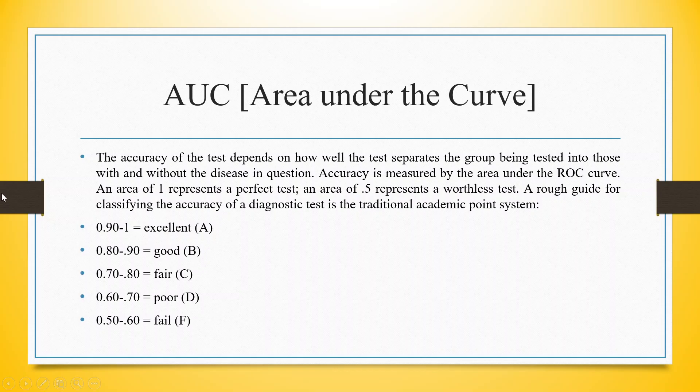A rough guide: if you get an AUC, area under the curve, between the range of 0.90 to 1, excellent. 0.80 to 0.90, good. 0.70 to 0.80, fair. 0.60 to 0.70, poor. 0.60 to 0.50, fail.